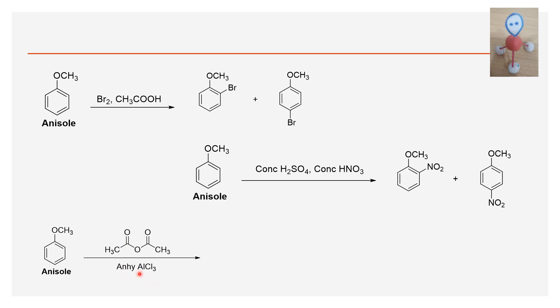In the presence of a Lewis acid, acetic anhydride generates an acyl cation. The acyl cation undergoes electrophilic aromatic substitution with anisole. Here also we get ortho and para products.